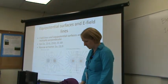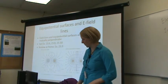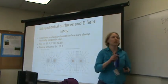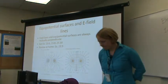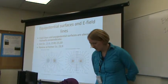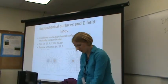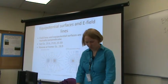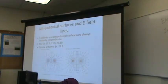We'll do examples 23.6 and 23.8. Example 23.6 says: by integrating the electric field, find the potential at a distance r from a point charge q. I'm going to show you how we can integrate to find the potential — this goes back to the earlier question about if you've got a point charge, how would you actually calculate the potential? We're just going to solve the integral.